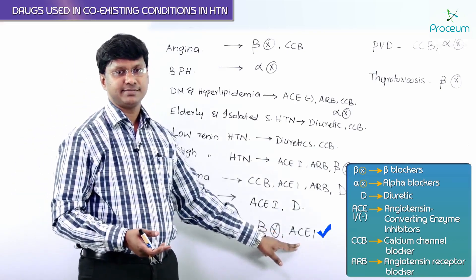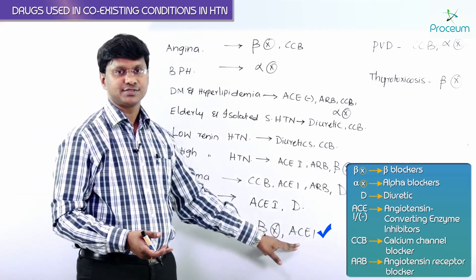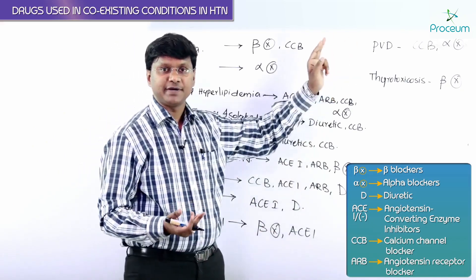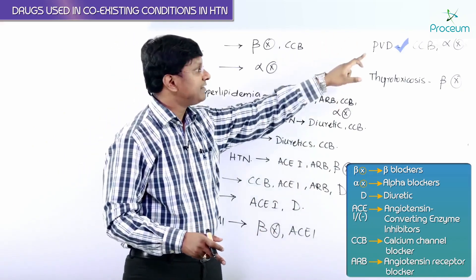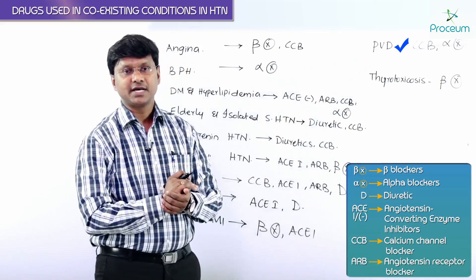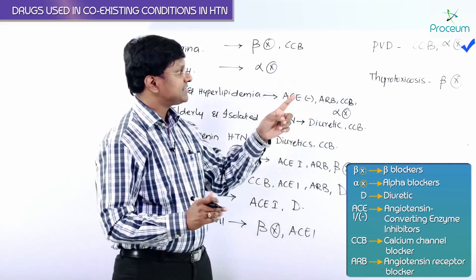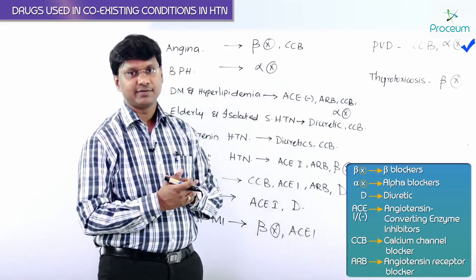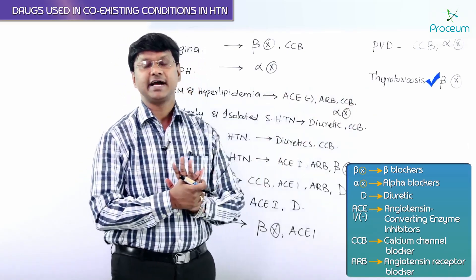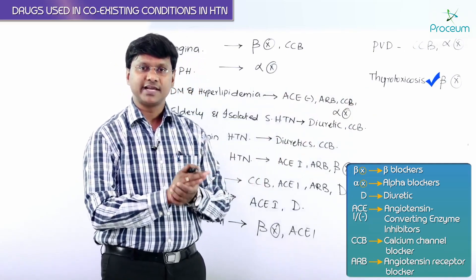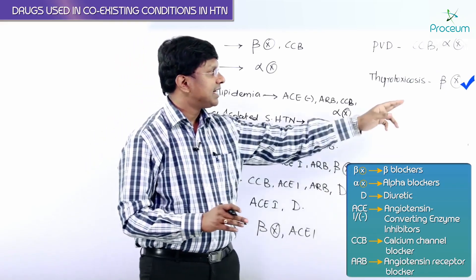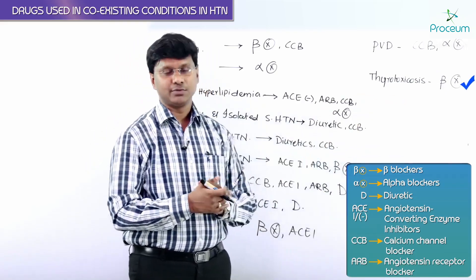If the individual is having hypertension associated with peripheral vascular disease, the preferred drugs are calcium channel blockers and alpha blockers. If the individual is having hypertension associated with thyrotoxicosis, the preferred drugs are beta blockers.